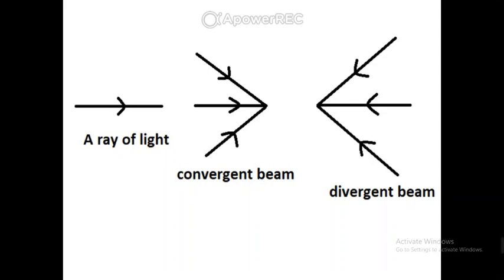A ray of light is a straight line with an arrowhead. A convergent beam means rays of light meeting at a point. A divergent beam means rays of light departing from a point.